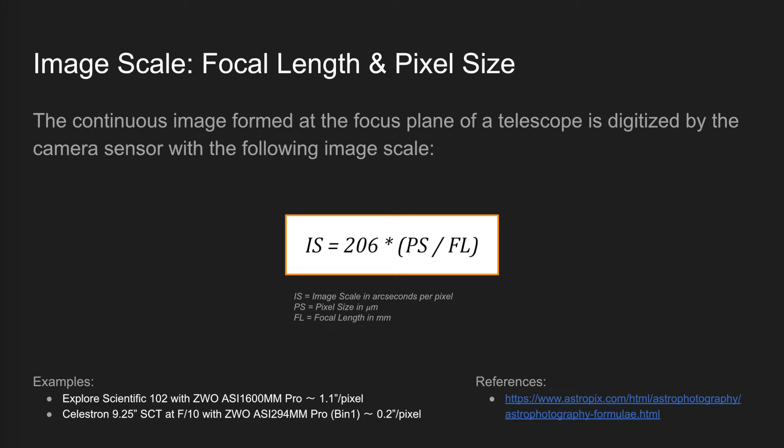The second factor to consider is image scale, which is measured in arc seconds per pixel. Image scale is the amount of sky covered by one pixel on your camera sensor. It's a function of the focal length of your telescope and the size of the pixels of your camera sensor. Here I included the formula obtained from astropix.com. For example, a ZWO ASI 1600 coupled with an Explore Scientific 102 has an image scale of 1.1 arc seconds per pixel.